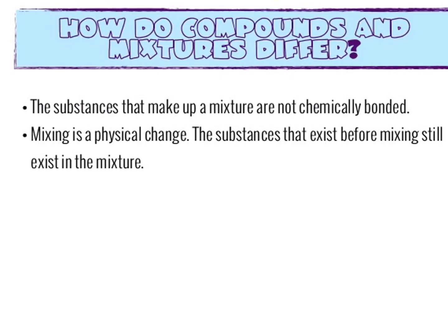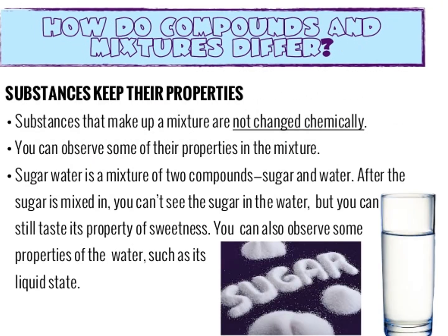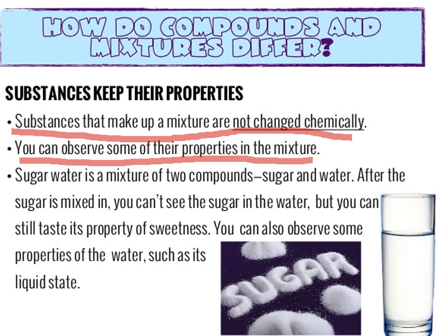How do compounds and mixtures differ? The substances that make up a mixture are not chemically bonded. Mixing is a physical change, but the substance that existed before mixing still exists in the mixture. Substances that make up a mixture are not changed chemically, and you can observe some of their properties in the mixture.